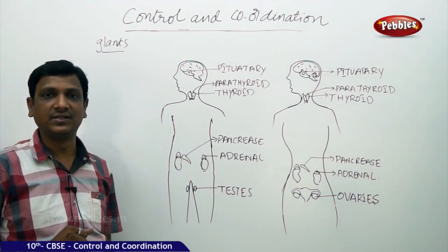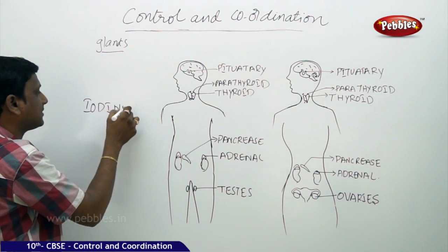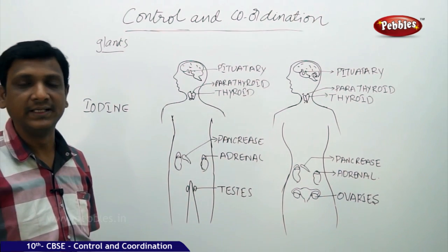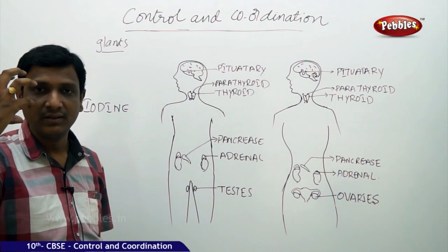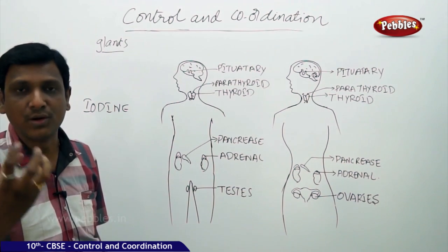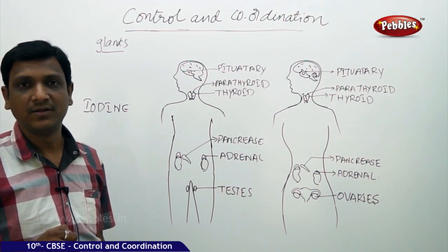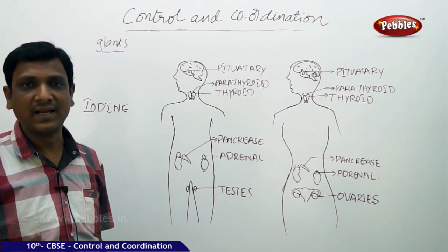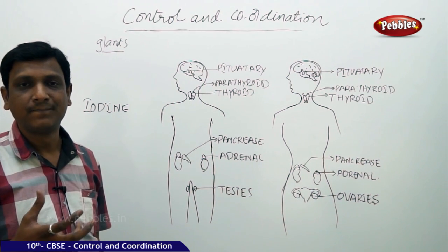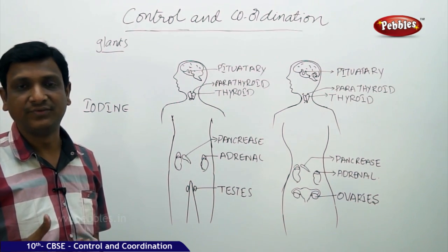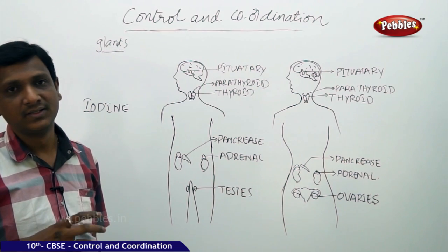To secrete thyroxin, the thyroid must have one important substance — iodine. If iodine is not present, the thyroid cannot produce thyroxin properly. If thyroxin is lacking, it may lead to a disease called goiter, where the eyes become protruded, appearing as if they are coming out of the eye sockets. Thyroid gland problems are common in females around age 30–35, due to imbalance in thyroid gland secretion.